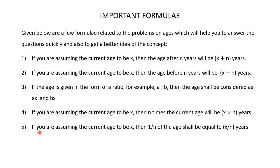If you are assuming the current age to be x, then 1/nth of the age shall be equal to x divided by n years. Supposing you are assuming the current age to be 20 years, then 1 fourth of that age will be equal to 5 years, which is nothing but 20 divided by 4 years.